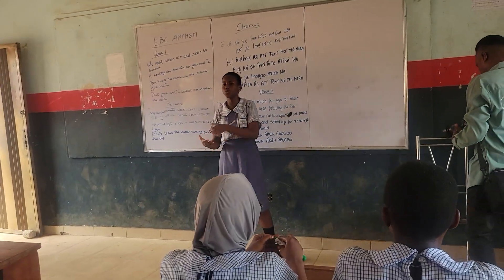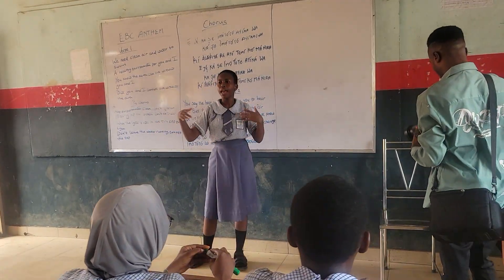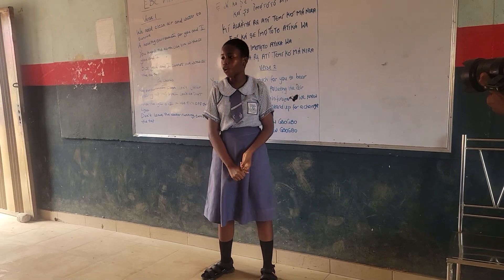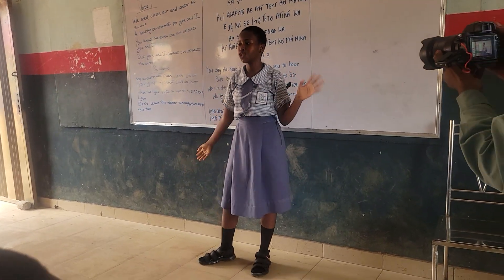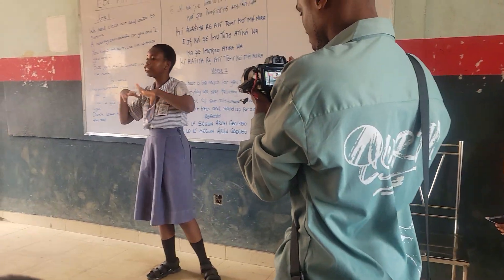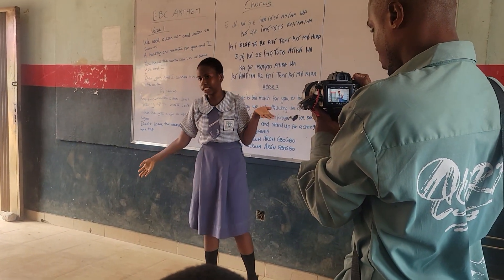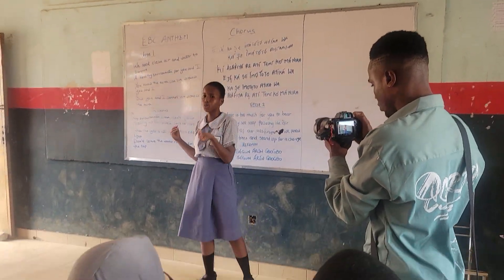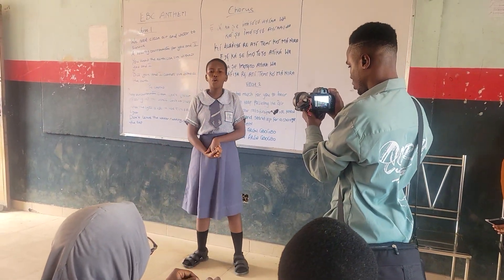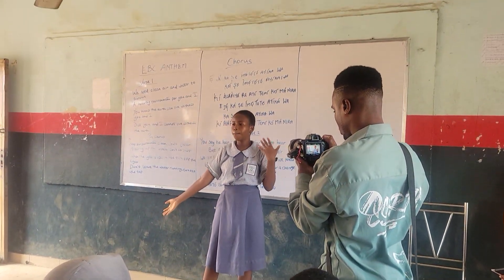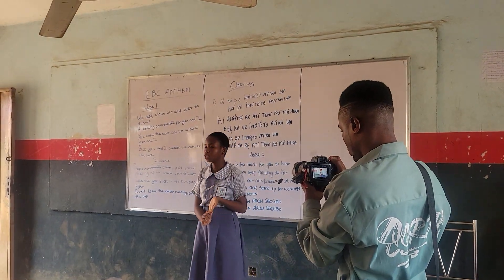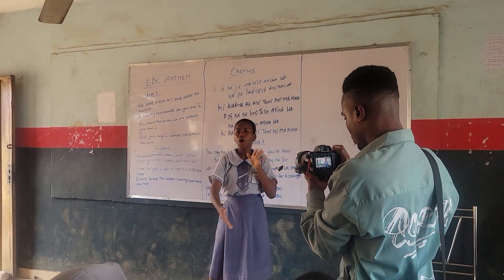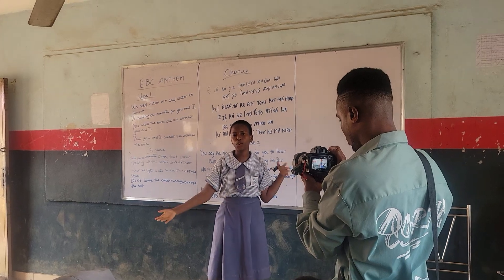The term pest is generally used to describe anything that damages livestock and crops. In general, in a broader understanding, pests are a competition to humanity. Types of pests can include pathogens, vertebrates, and invertebrates, which can cause harm to our ecosystem.